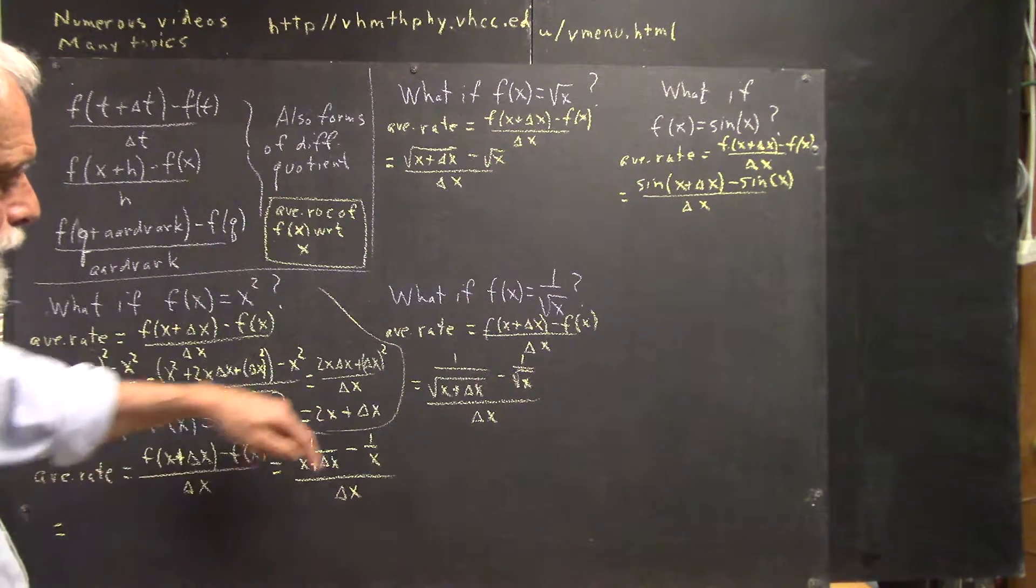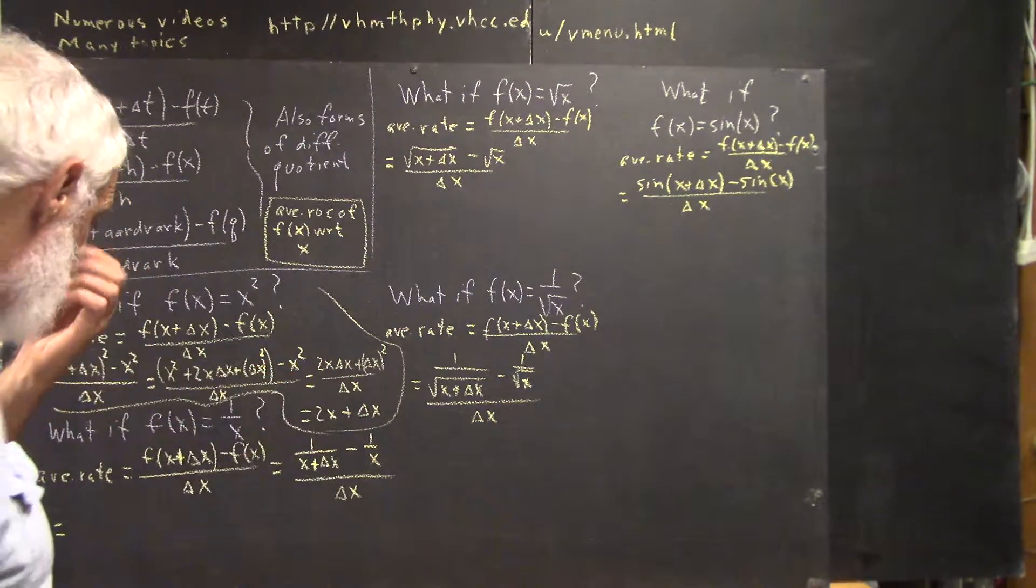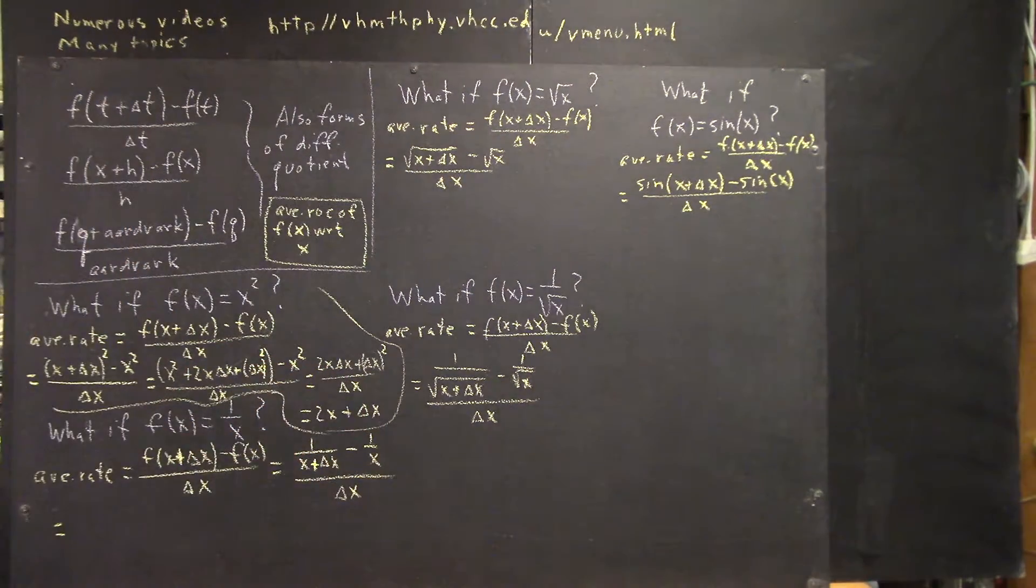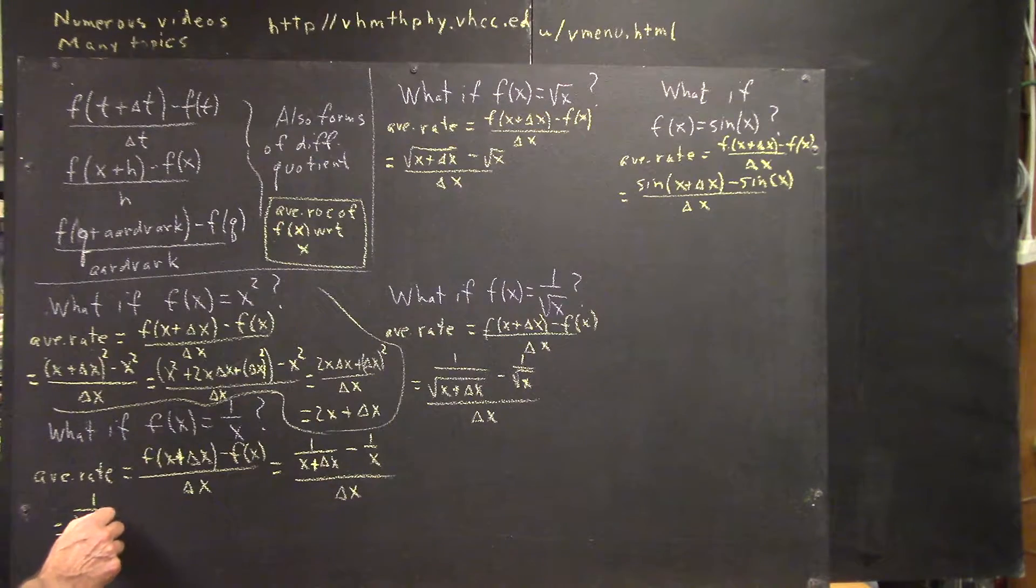Well, x is not a factor of this, and this is certainly not a factor of x, so it's just going to be the product of these two denominators. Now, how do we form that? Well, I'm going to go through the details.